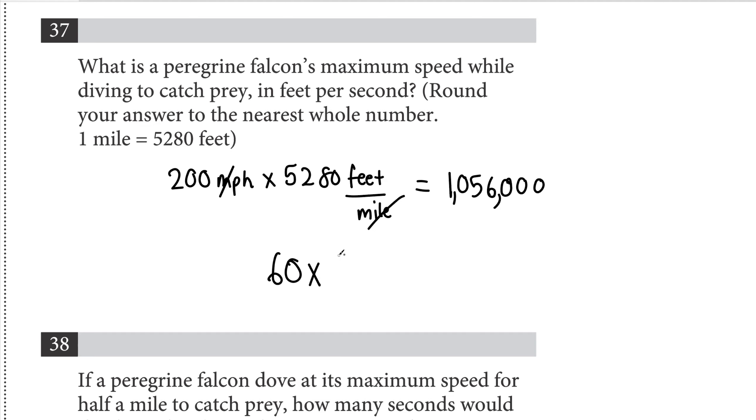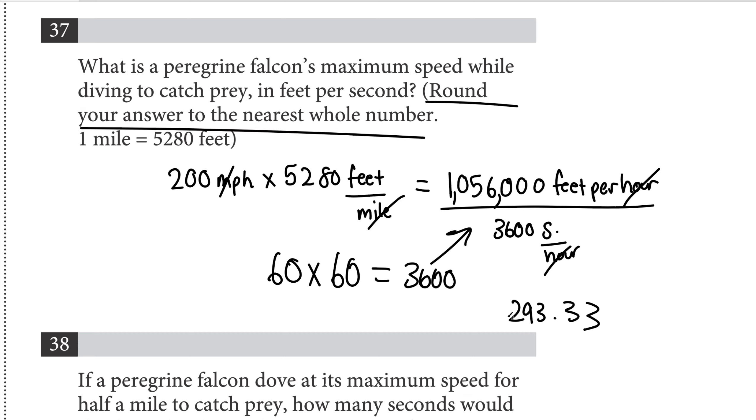Now what we need to do is divide it by the number of seconds that are in an hour. So we have 60 seconds in a minute times 60 minutes in an hour, so we have 3600 as our denominator. So we have feet per hour, these two cancel out and we're just left with feet per second. Now what we're left with is 293.33, but it says round to the nearest whole number, so it's going to be 293 seconds.